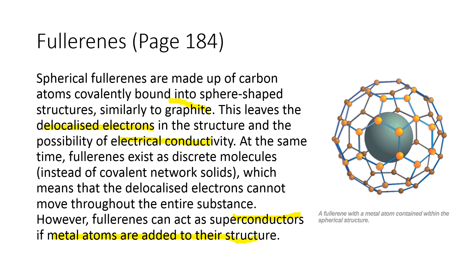Different resources have different information about the electrical conductivity of fullerene. Some say the delocalized electrons do not move within the structure because it exists as a discrete molecule, not a covalent network solid. Unlike diamond, which is a giant covalent lattice, and graphite, which is a layer lattice structure, fullerene is a discrete molecule and cannot conduct electricity through delocalized electron movement.